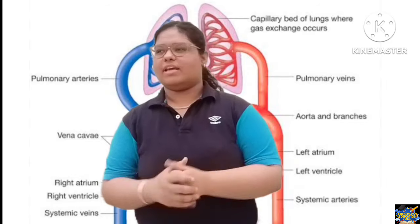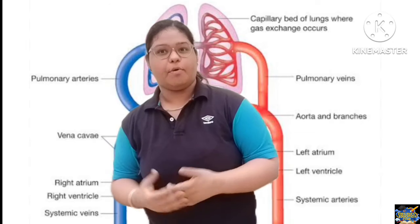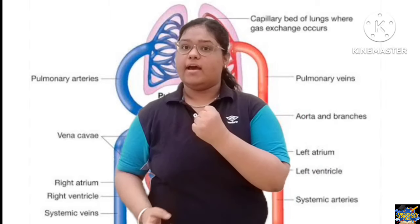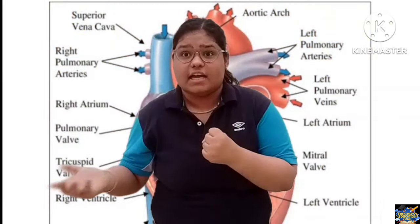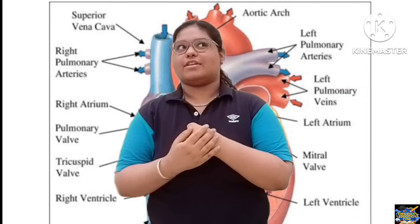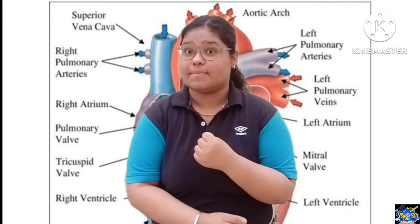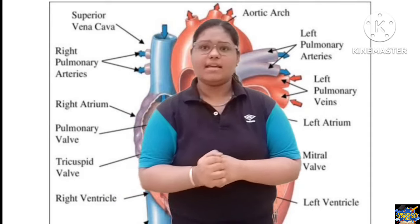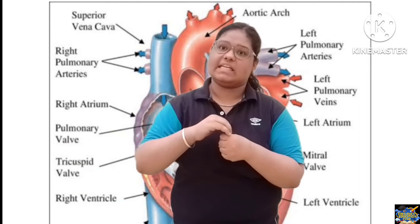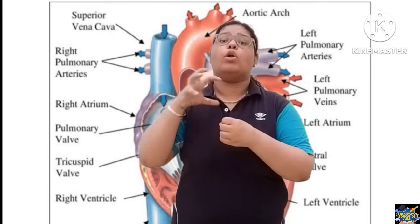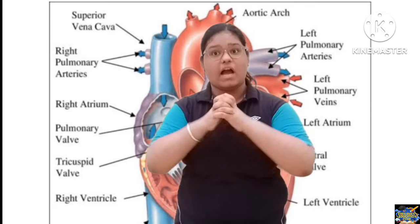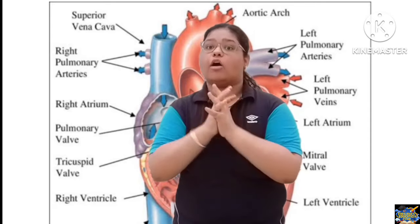Veins carry deoxygenated blood and they bring it to the heart. The heart then pumps the blood. Think of it in terms of negativity and positivity — veins bring deoxygenated blood to the heart, and the heart pumps it further. The pumping organ contracts and relaxes continuously.